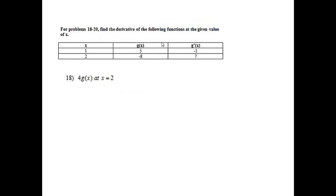Number 18, for problems 18 through 20, find the derivative of the following functions at the given value of x. Number 18 says 4g of x at x equals 2. We do not need to use a product rule because it does not say 4x, it just says 4. So we're just going to let the 4 tag along. So if I take the derivative, 4g of x, the derivative of g is g prime of x.